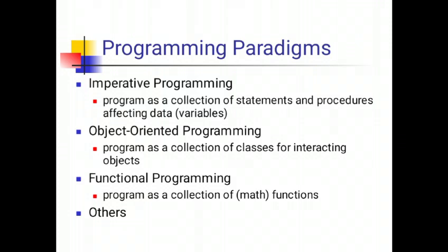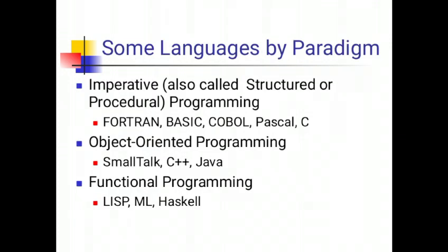First is imperative programming, in which the program is a collection of statements and procedures affecting the data variables. Next is object-oriented programming, in which the program is a collection of classes for interacting objects. Then functional programming, where the program is a collection of mathematical functions.